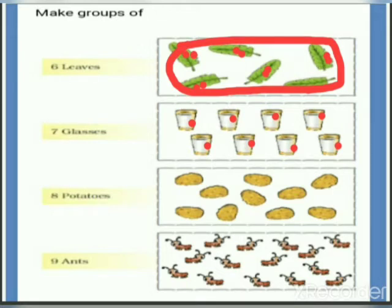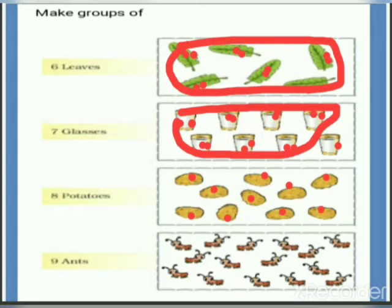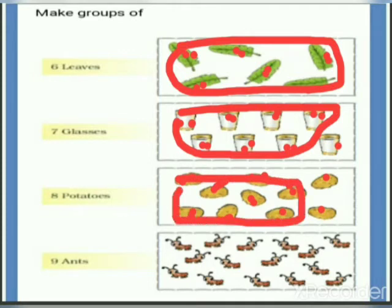Now let us make a group of seven glasses: one, two, three, four, five, six, seven. Let us make a group of eight potatoes. There are ten potatoes. Now let us make a group of eight: one, two, three, four, five, six, seven, eight. Let us make a group of eight potatoes.